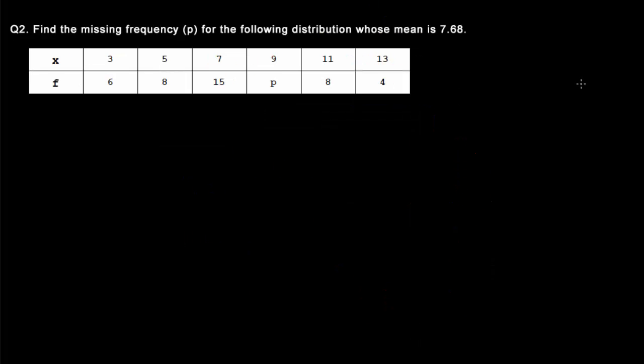Let's look at another problem. Find the missing frequency p for the following distribution whose mean is 7.68. In this question the mean is already given and we need to find out the missing frequency p. Let me recreate the table and put it in vertical form.